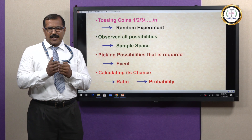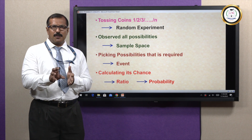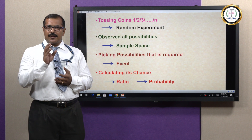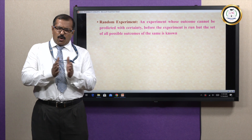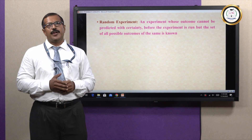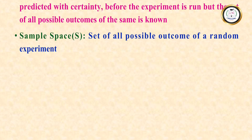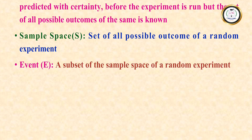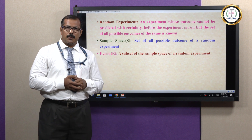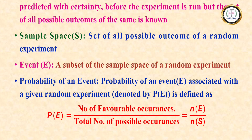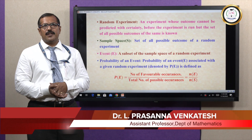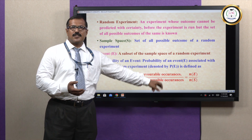So first, we perform a random experiment. Then we observe all possibilities. Then we pick the possibilities that are required, and finally we calculate the ratio, which is the chance for what is required. A random experiment is doing some process, knowing what possibilities are going to happen, but not knowing which possibility is going to occur. Sample space is the set of all possibilities associated with a random experiment. Event is a subset of the sample space. Probability of an event P(E) is defined as number of favorable occurrences divided by total possible number of occurrences — N(E) divided by N(S).